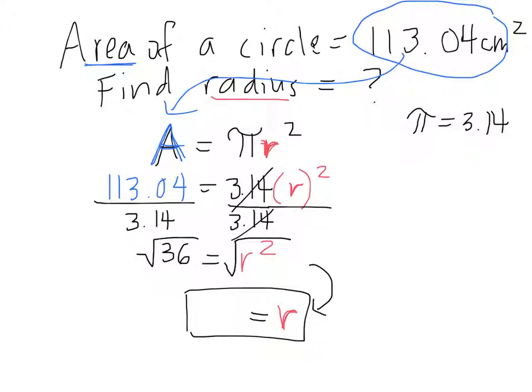What times what is 36? Six. So the radius equals 6 centimeters.